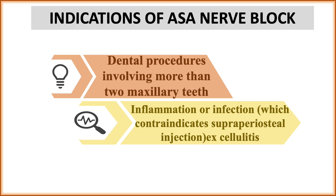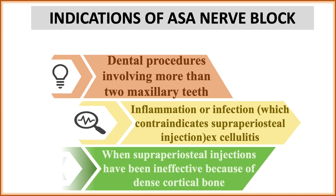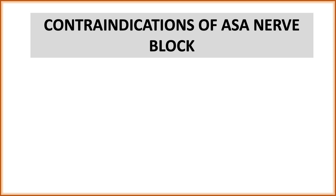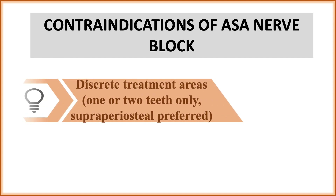The third indication is when supraperiosteal injection has been ineffective because of dense cortical bone. In areas where dense cortical bone is present, local infiltration will not penetrate the bone and will not give sufficient anesthetic effect. In such cases, we give a nerve block instead.